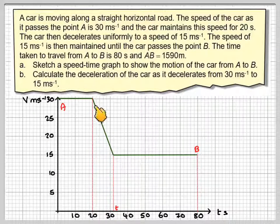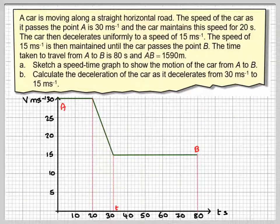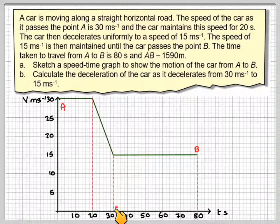Now we've got to calculate the deceleration of the car as it decelerates from 30 metres per second to 15 metres per second. That's going to be the change in speed divided by the time. But we don't actually know what this time is. We've got to try and find it out.